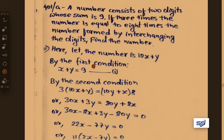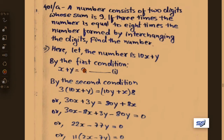From the first condition of our question: the sum of the digits of the two-digit number is x and y. So x plus y equals 9. Let this be equation 1.